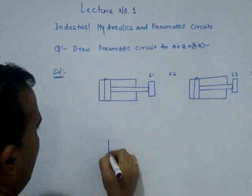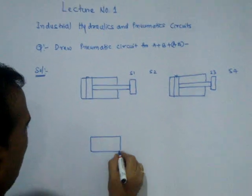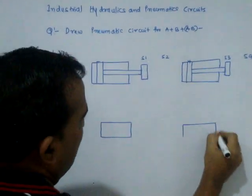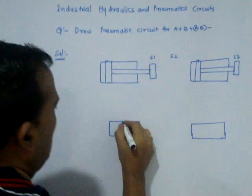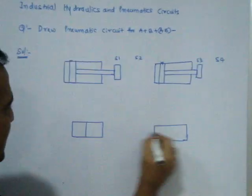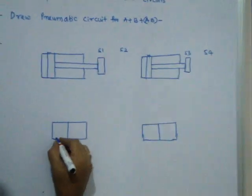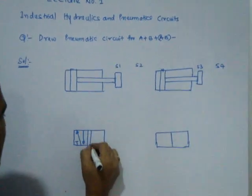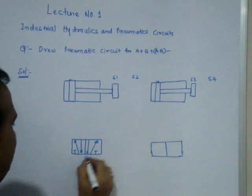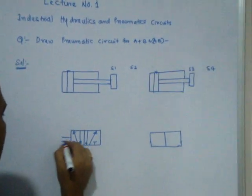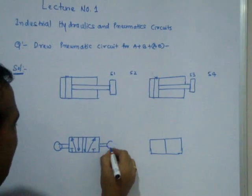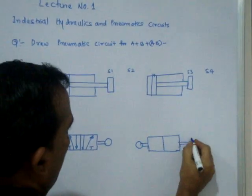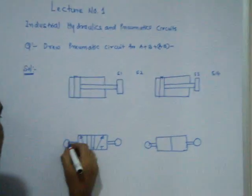Here we have a 5/2 valve, and here also a 5/2 valve. There are two positions on each valve and five ports on each. These valves are mechanically operated, as shown by this symbol — mechanically operated.